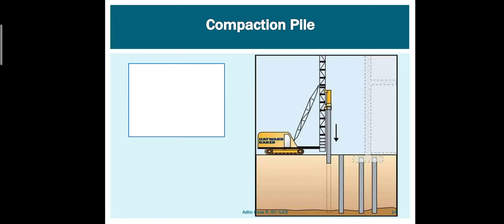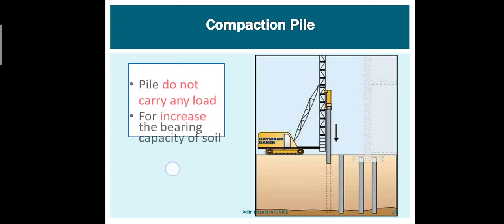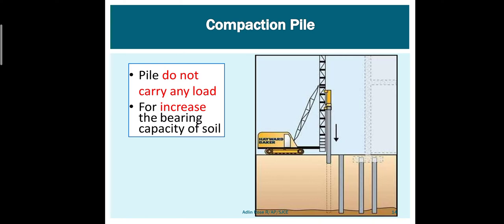Compaction pile: when you insert pile foundations into loose soil, they increase the bearing capacity of the soil. Like stone columns — where holes are drilled in the ground and filled with aggregates — the loose sand becomes dense and its bearing capacity increases. Compaction piles do not directly involve in load transfer mechanism, but they improve the bearing capacity of the soil.